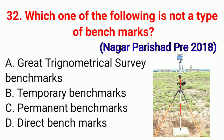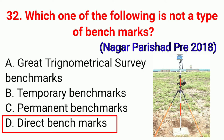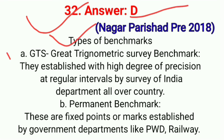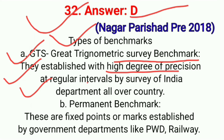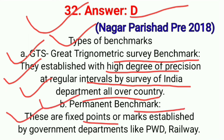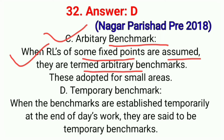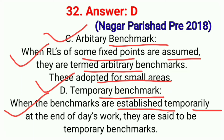Question No. 32. Which one of the following is not a type of benchmark? Correct option D: Direct benchmark. Types of benchmark: first, GTS — Great Trigonometric Survey benchmark, established with high degree of precision at regular intervals by Survey of India Department all over the country; second, Permanent benchmark — fixed points or marks established by government departments like PWD, Railway; third, Arbitrary benchmark — when reduced level of some fixed points are assumed, adopted for small areas; fourth, Temporary benchmark — benchmarks established temporarily at the end of day's work. Direct benchmark does not exist. Correct option D.